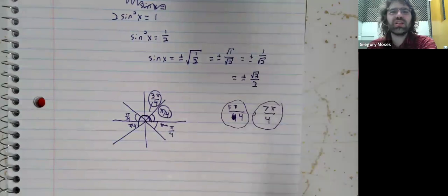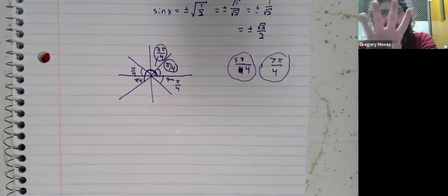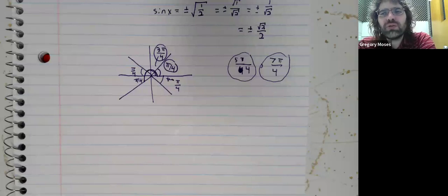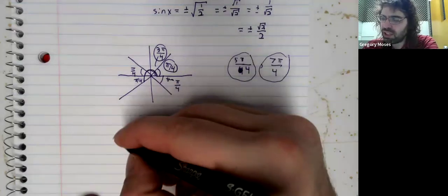So we get some solutions. In fact, we get 4 solutions. But as with the last video, there are really an infinite number because of periodicity.